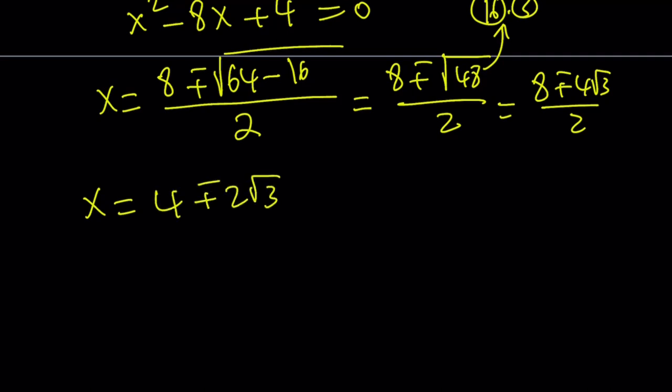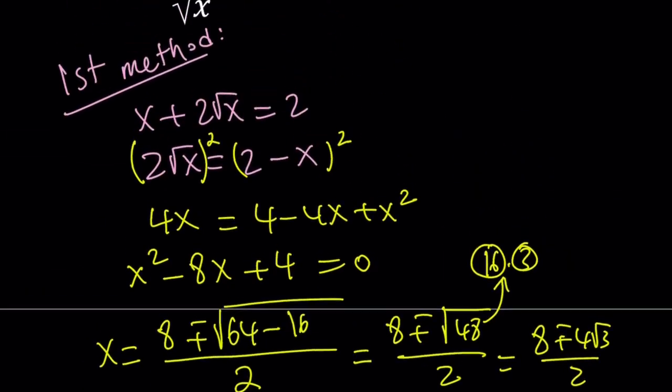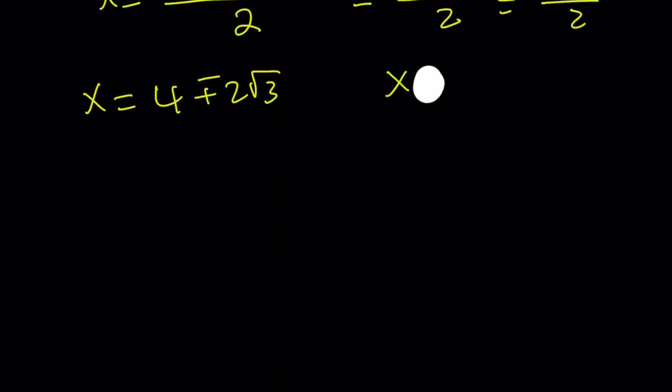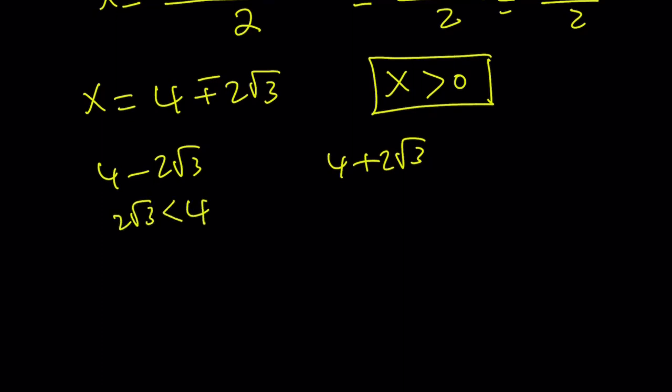At this point, you might be asking, which one are we going to use? And here's one thing we need to check. The domain of the original equation requires x to be greater than or equal to 0. So x needs to be greater than or equal to 0. Obviously, we do know that x is not going to be 0 because 0 doesn't satisfy. So we can safely say that x must be positive. When you check both of these roots, like 4 minus 2 root 3 and 4 plus 2 root 3, you're going to notice that they're both positive because 2 root 3 is less than 4. Why? Because root 3 is less than 2. It's about 1.7-ish, right? So they're both positive.